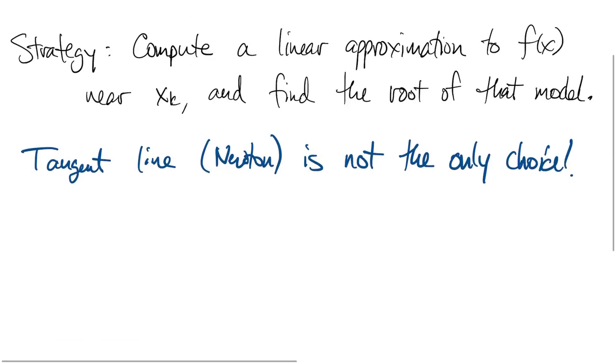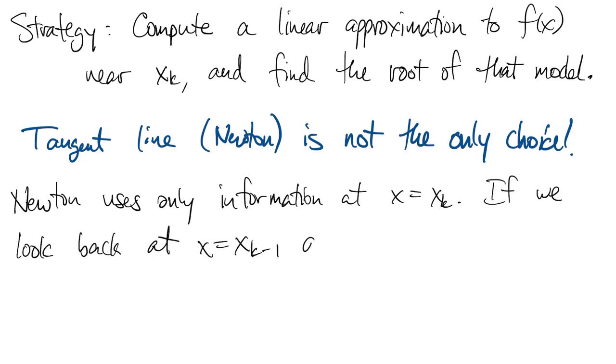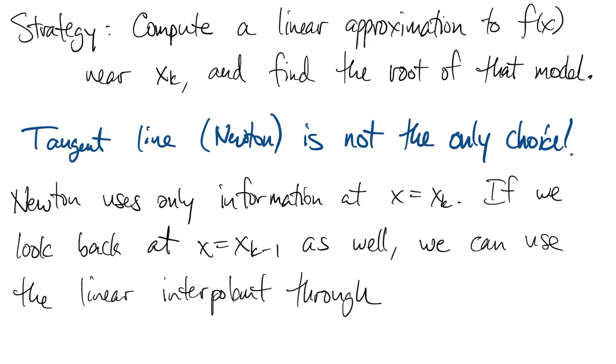And when you think about it, there's a little bit of an oddity in Newton's method that we only use the most recent point. But we have a history, at least after the first iteration. So if we were to look back even just one more iteration, then we have two points that the function passes through, and we can use the linear interpolant through those two points.